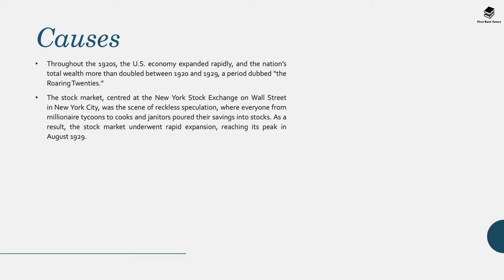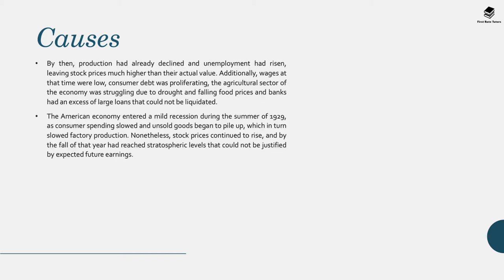There were several causes that led to some of the worst events of the interwar period. Throughout the 1920s, the US economy expanded rapidly — the nation's total wealth more than doubled between 1920 and 1929, a period dubbed the Roaring Twenties. The stock market, centred at the New York Stock Exchange on Wall Street, was the scene of reckless speculation, where everyone from millionaire tycoons to cooks and janitors poured their savings into stocks. The stock market underwent rapid expansion, reaching its peak in August 1929, by which time production had already declined and unemployment had risen, leaving stock prices much higher than actual value.